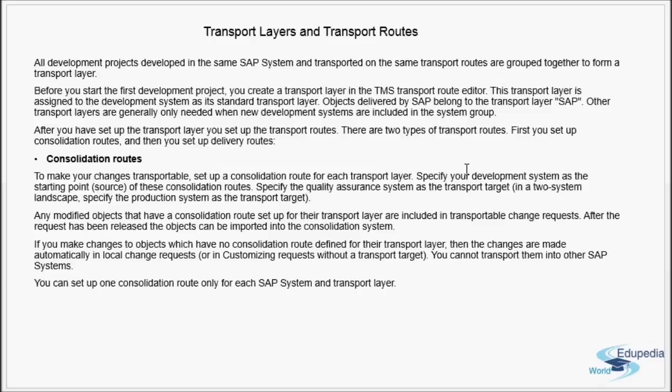There are two types of transport routes. First, you set up the consolidation route, and then you set up the delivery routes. Once you have your transport layer, the next step in setting up TMS configuration is to set up transport routes. We have two routes: one is consolidation and the other is the delivery route.